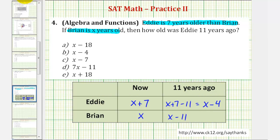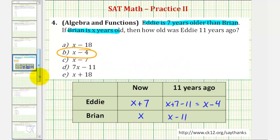So looking at our choices, our answer is b, x minus four. I hope this was helpful. I hope this is useful.